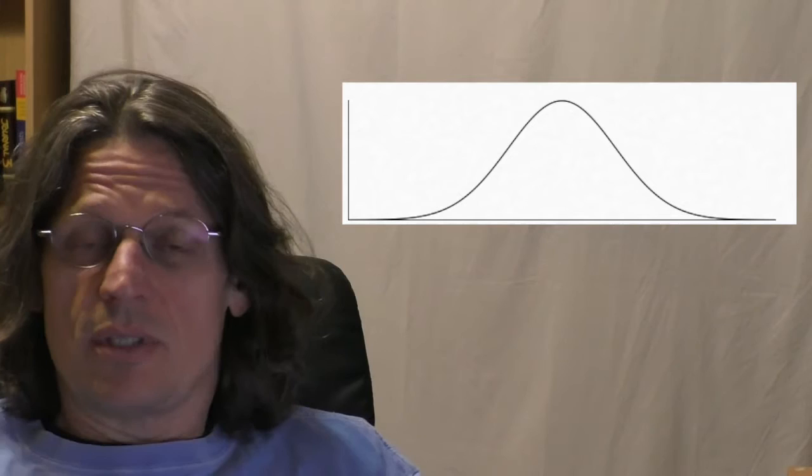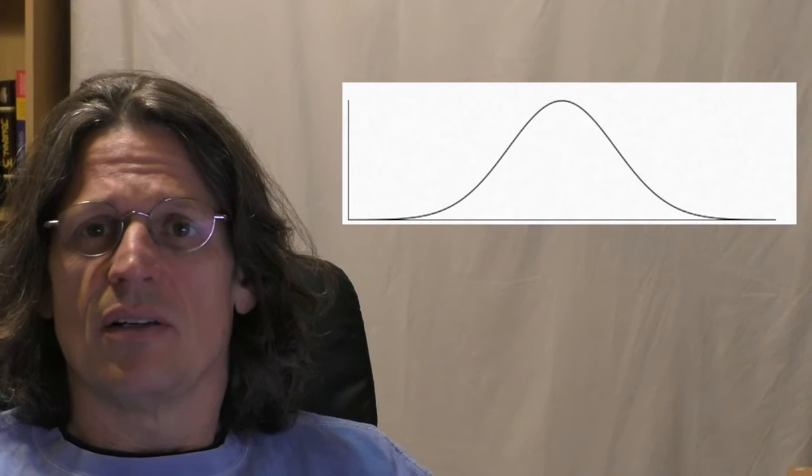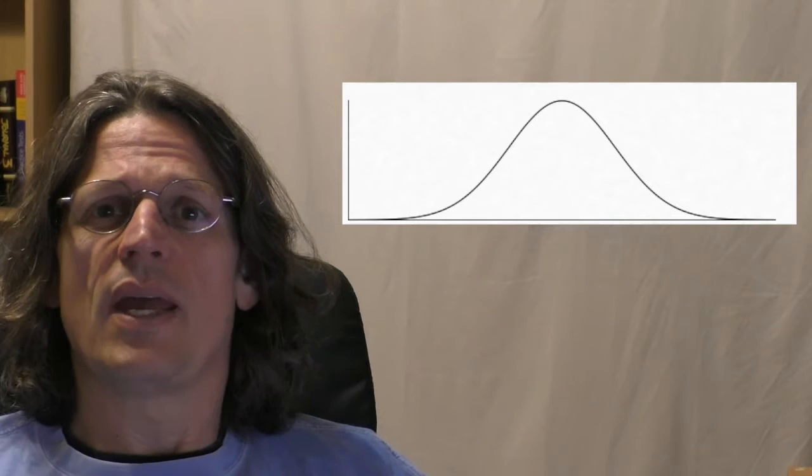It's a continuous distribution and it can take values all the way from negative infinity to positive infinity. As you can see, it tends to taper off, so the probability of being way out towards infinity is pretty small.